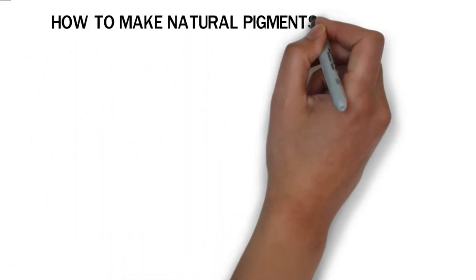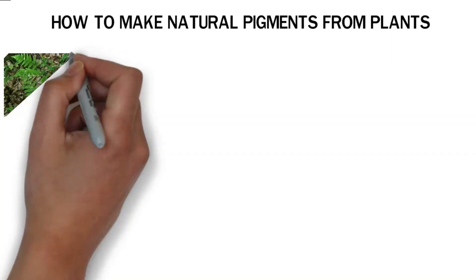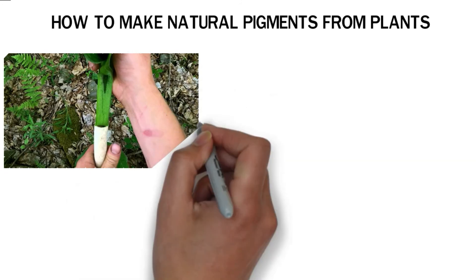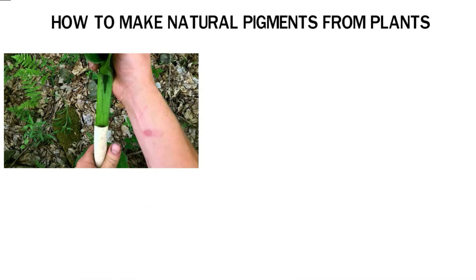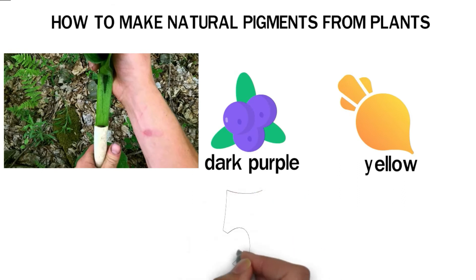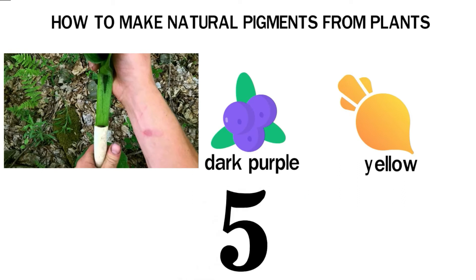Using plants to make natural pigments is a unique form of art. You can easily derive colors from different types of plants. Green plants like spinach will provide green pigments, blueberries will give a rich dark purple pigment, and golden beets deliver a yellow pigment.